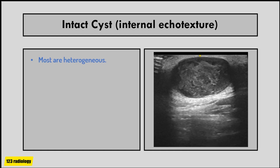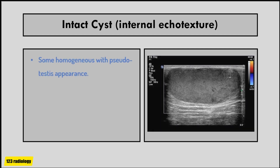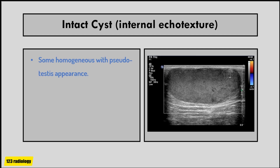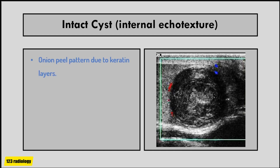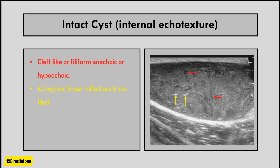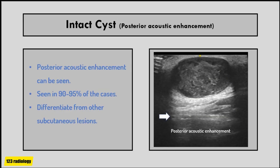The internal echo texture of the cyst depends on the presence of variable amounts of keratin within the cyst, which alters the appearance of internal echoes. Most cysts are inhomogeneous or heterogeneous. Some epidermal cysts are homogeneous and show a pseudotestis appearance. Some cysts may show alternating hypoechoic and hyperechoic eccentric rings due to keratin layers — this is called the onion peel pattern — or they may appear as a hypoechoic lesion with anechoic or hypoechoic clefts and scattered linear echogenic reflectors.